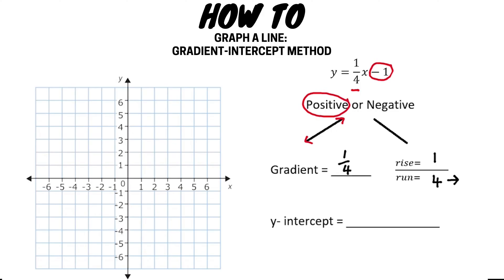Our y-intercept is the constant, or the c value in an equation, and is the point where the line crosses the y-axis. In this example our y-intercept is negative one.